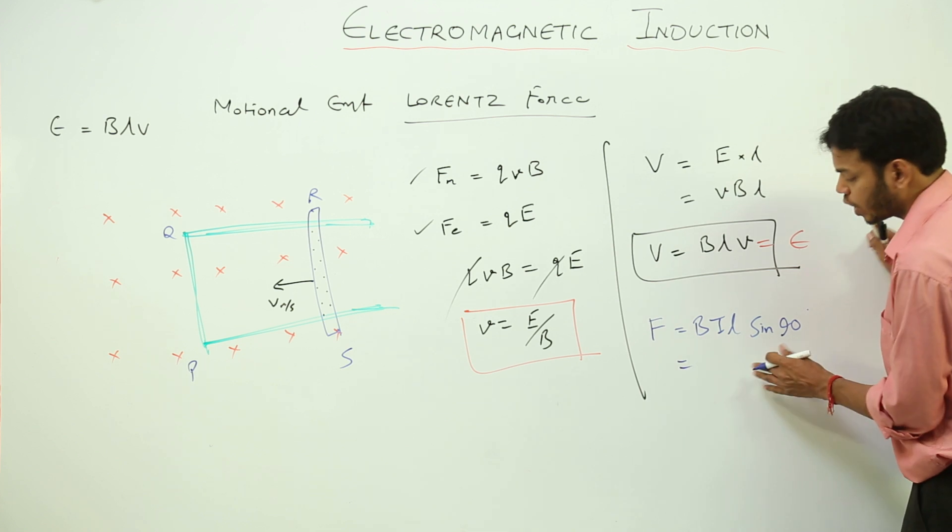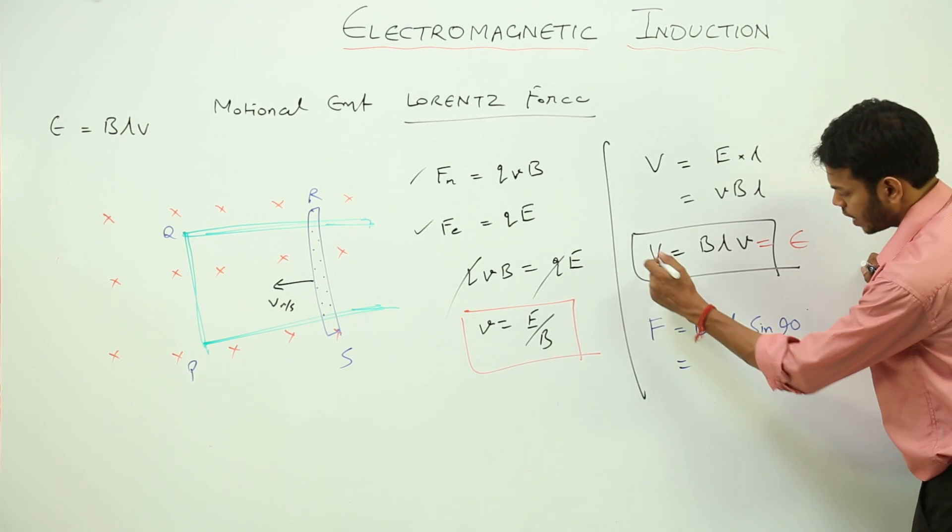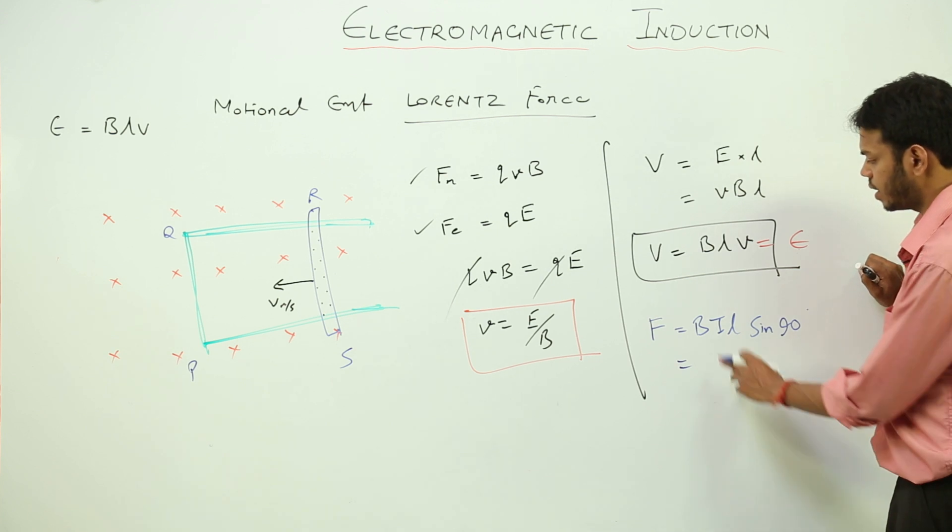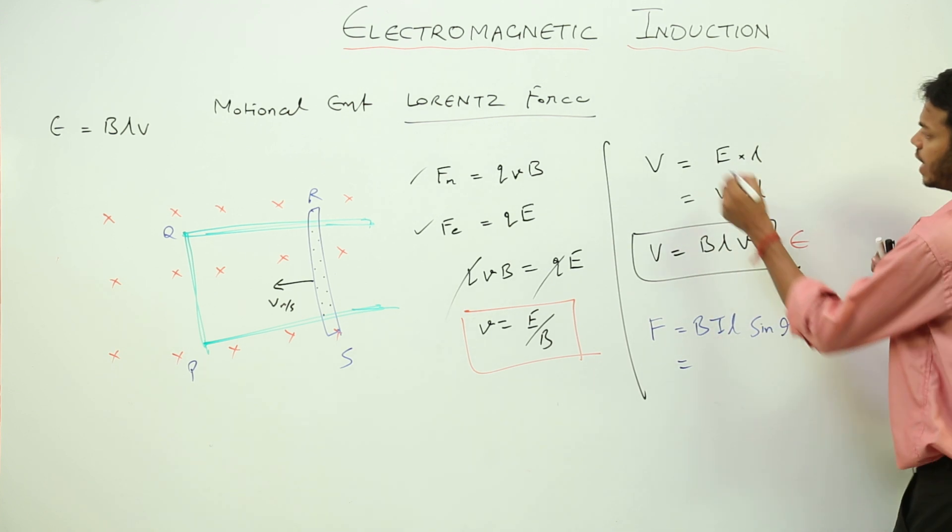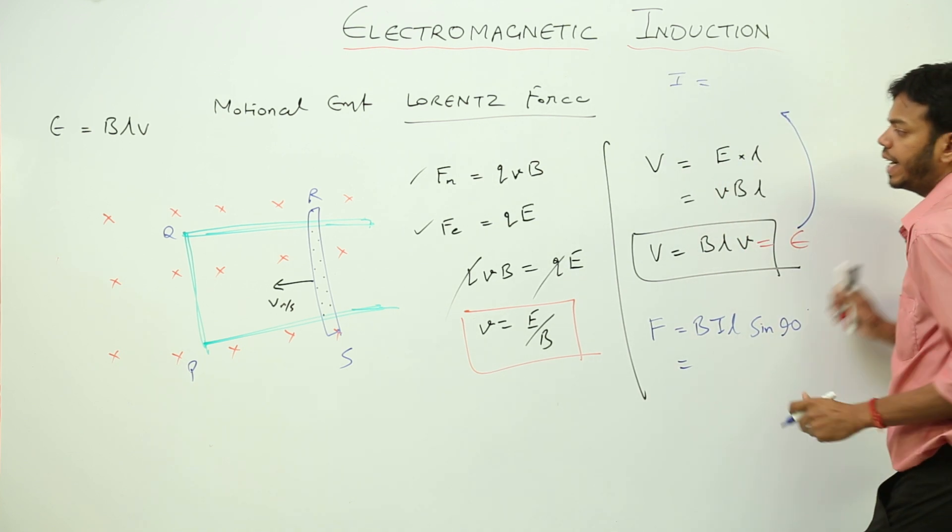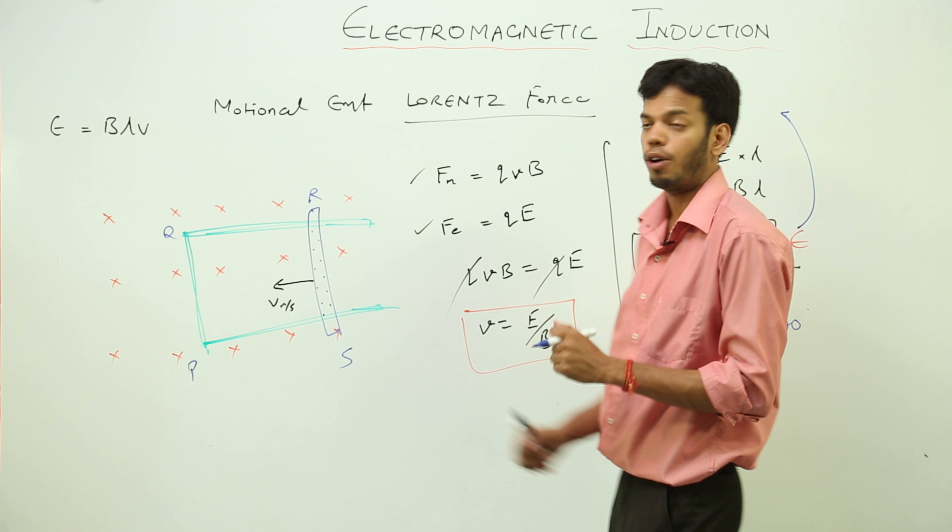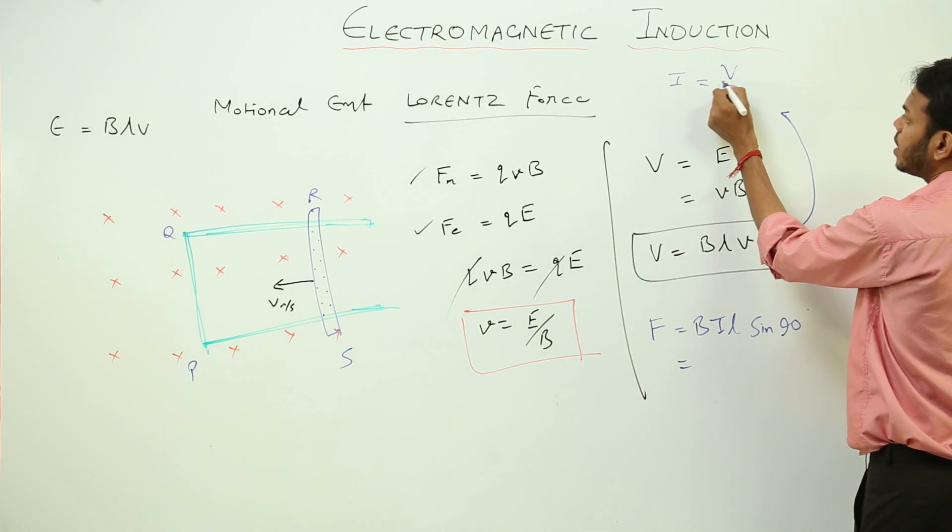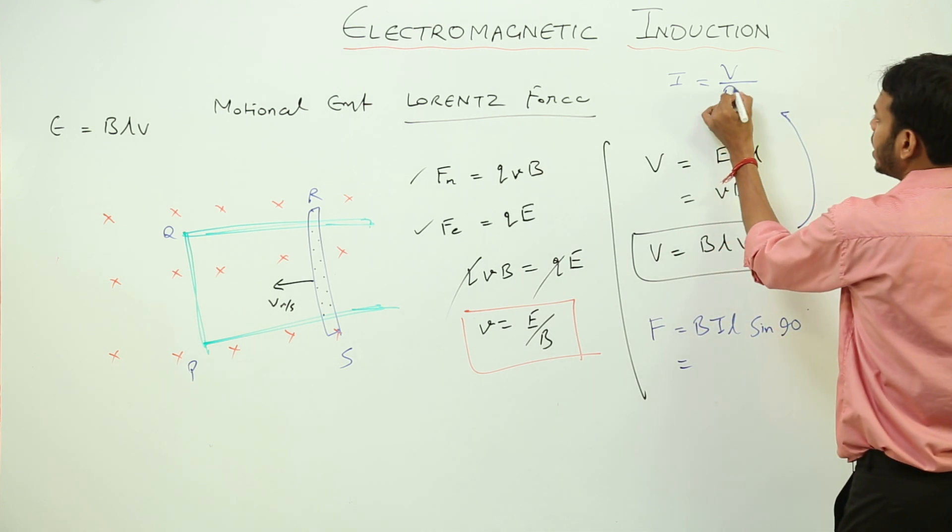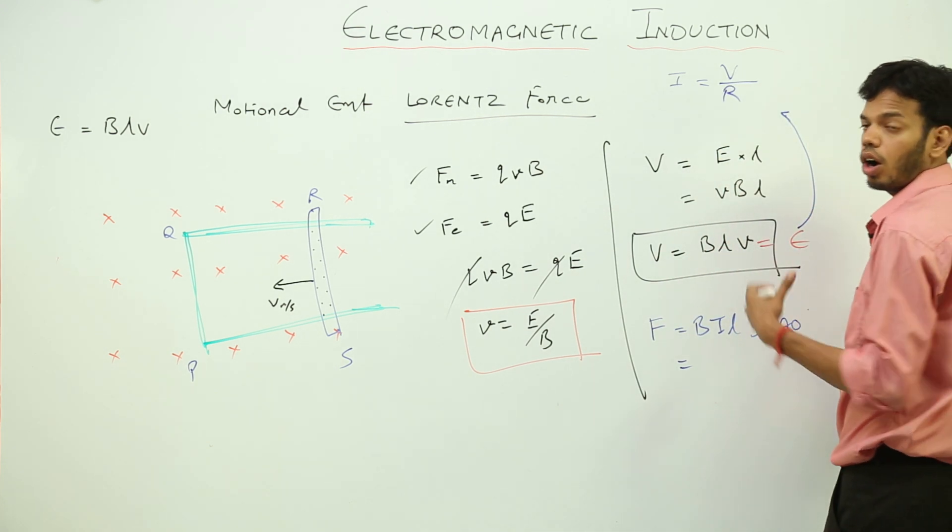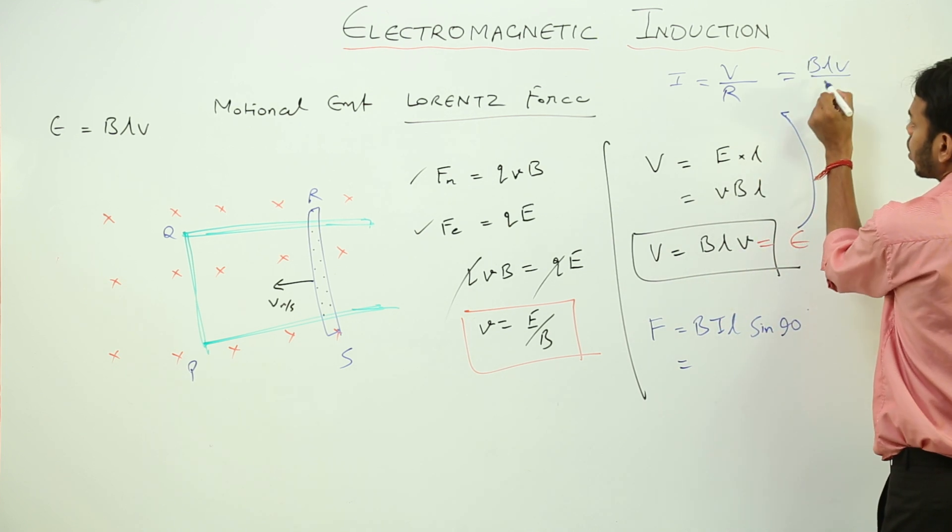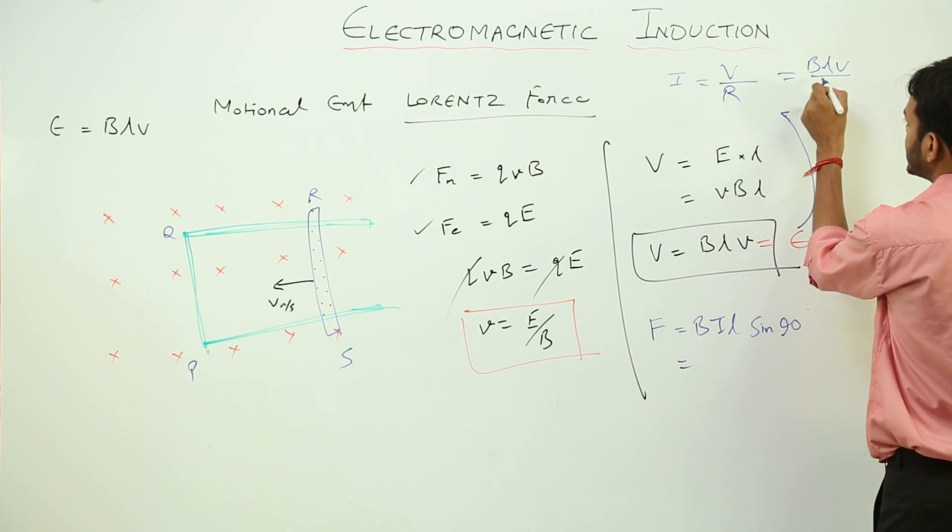BIL. What is I? We do not have I but from this equation we can find the value of current induced in this part. How? What is current? Current is potential difference across RS divided by the resistance of this wire or the conductor. Potential difference developed is BLV upon the resistance R.